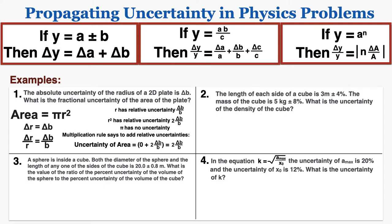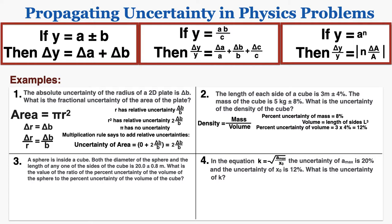Example 2: the length of each side of a cube is 3 meters plus or minus 4%, and the mass of the cube is 5 kilograms plus or minus 8%. What is the uncertainty of the density? Density equals mass divided by volume. The percent uncertainty of the mass is 8%. Volume equals the side length cubed, so the percent uncertainty of the volume is 3 times 4%, which equals 12%. The division rule says to add percent uncertainties, so the uncertainty of the density is 8% plus 12%, which equals 20%.